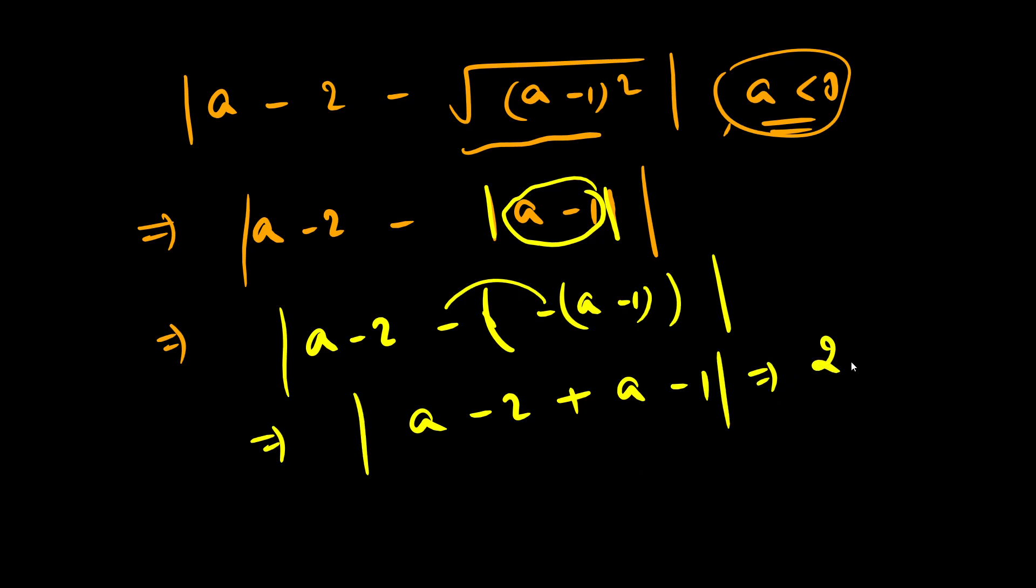From here I get |2a - 3|. Since a is negative, this overall expression will be negative. This means I will again have to open with a negative sign, so this equals -(2a - 3), which gives us 3 - 2a.